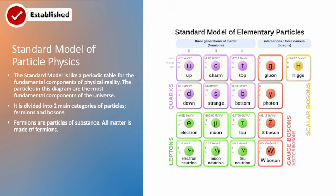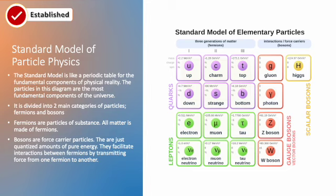Fermions are the particles of substance — all matter is made of fermions. Anything that's material is made of fermions: all the stars and planets and dust and plants and animals and people. Basically anything that can reflect light, at the most fundamental level, is made of fermions. Matter is generally made out of atoms. Atoms are made of protons, neutrons, and electrons. Protons and neutrons are made out of quarks. Quarks and electrons are types of fermions, so in that sense matter is made out of fermions.